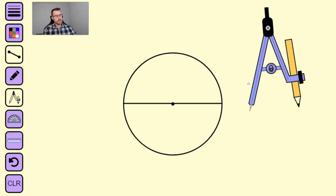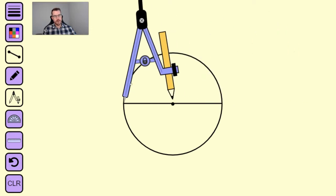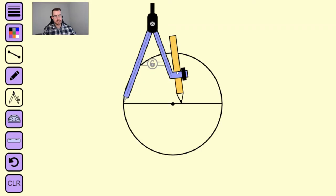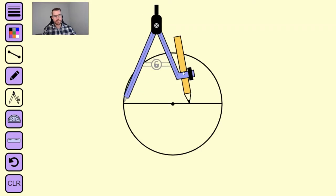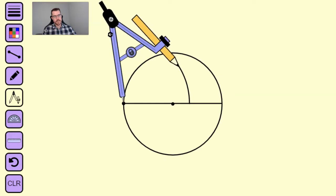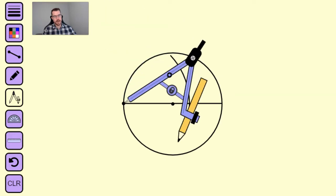Now the next step is very simple. You're going to construct a perpendicular bisector that goes through that diameter. Put your needle on the endpoint and trace an arc up and down.